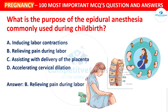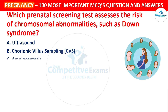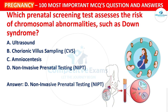Next question: Which prenatal screening test assesses the risk of chromosomal abnormalities such as Down syndrome? Your options: Ultrasound, Chorionic villus sampling (CVS), Amniocentesis, or Non-invasive prenatal testing (NIPT). The correct answer is Non-invasive prenatal testing (NIPT). NIPT is a blood test that assesses the risk of chromosomal abnormalities without invasive procedures.